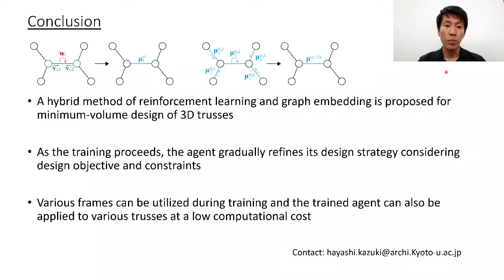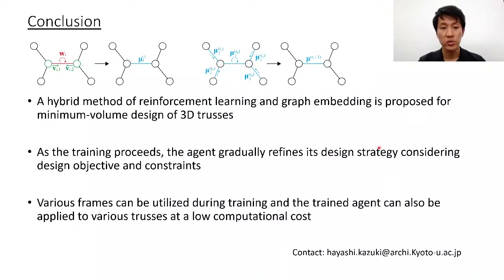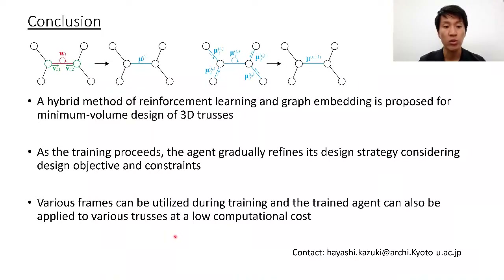We proposed a hybrid method of reinforcement learning and graph embedding for minimum volume design of 3D trusses. Through training, the agent successfully improved its design strategy. We would like to highlight that various frames can be utilized during training, and the trained agent can also be applied to various trusses at a low computational cost. Thank you very much for listening.